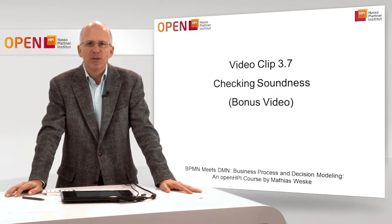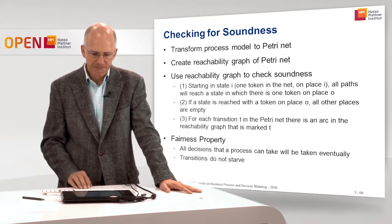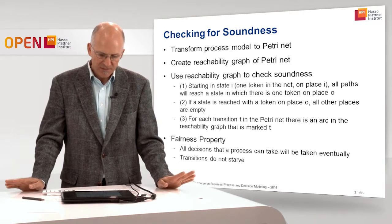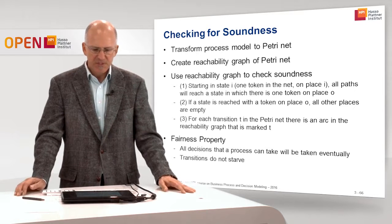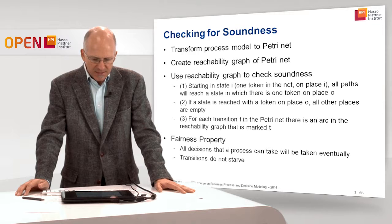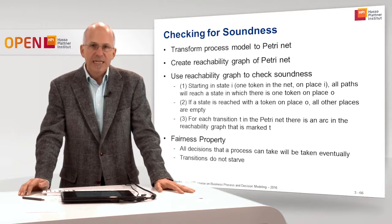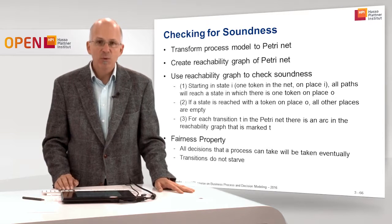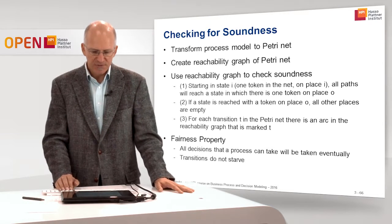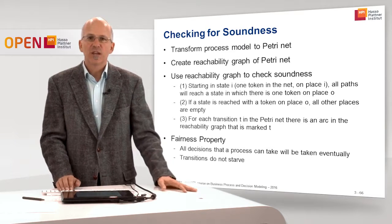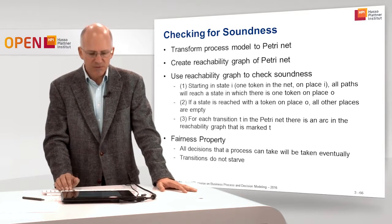Welcome to video clip 3.7 in which we check soundness. So how do we check soundness? What we did so far is we have transformed our BPMN process model to a Petri Net. We learned how to create a reachability graph from a Petri Net. And now we want to use the reachability graph to check soundness. Of course we need to check each of the three soundness properties.